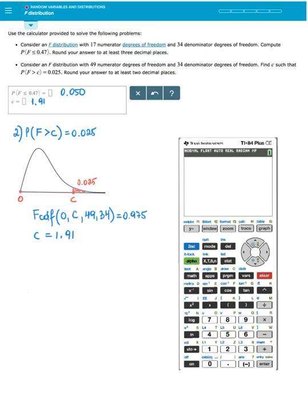Let's read the given information. Consider an F distribution with 49 numerator degrees of freedom and 34 denominator degrees of freedom. Find C such that probability that F is greater than C is 0.025.